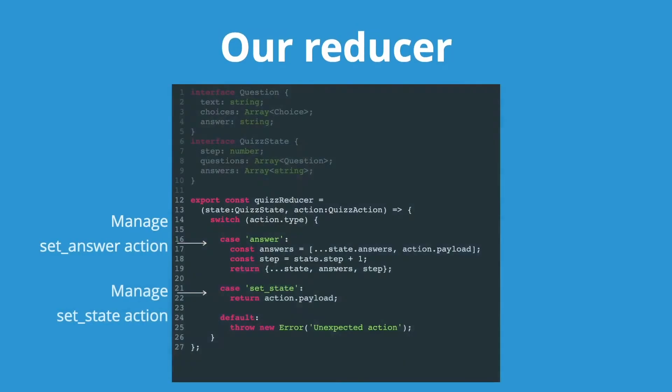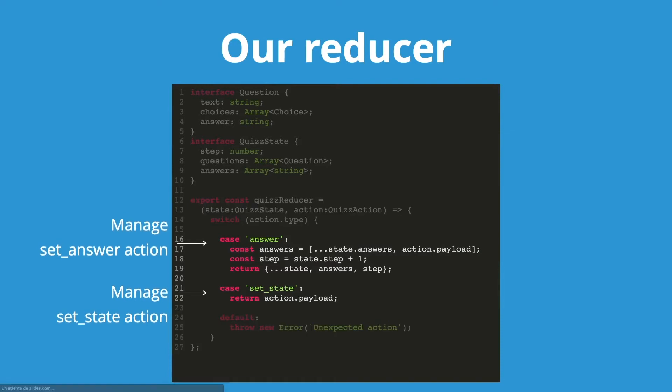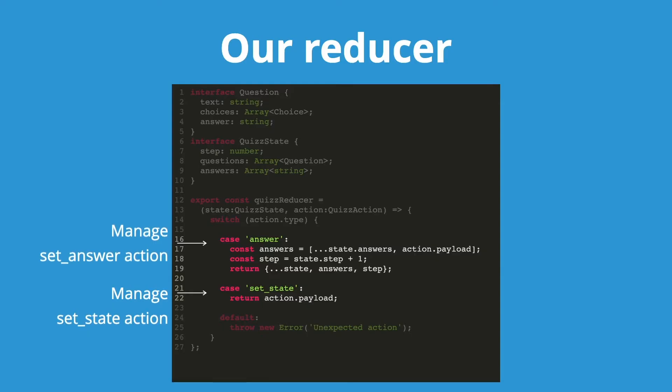Here is our reducer. It takes a state and an action, and it has a switch case which manages each case for each action type. We have the part of the function that manages the answer and the part that manages the set state. The set state part is very simple — it simply returns the payload. What's more interesting is what's happening inside the answer part.